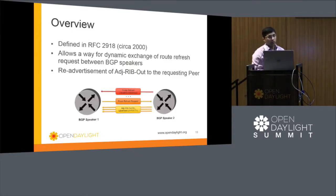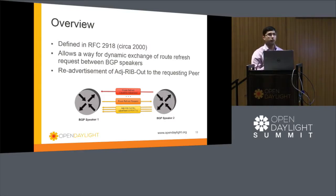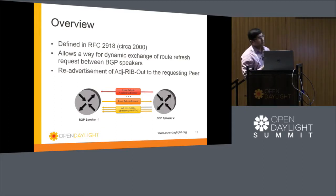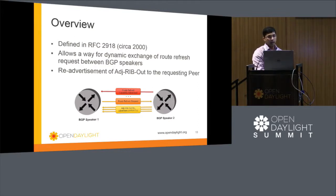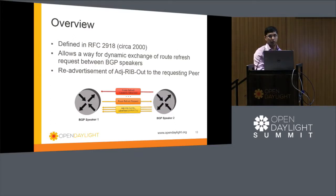The next feature is Route Refresh, defined in RFC 2918, which came out in the year 2000. Those familiar with BGP will recognize it as a well-known feature. It provides the capability for a BGP speaker to request its peer to resend routing information. The typical sequence is: two BGP speakers exchange the route refresh capability during the open message, and then if one speaker wants the other to resend routing updates, it sends a route refresh message and receives back the set of routing updates from the peer.